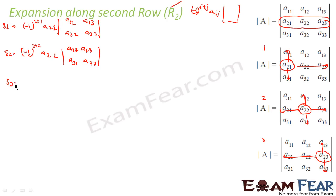For set 3, I have a23, so it will be minus 1 to the power 2 plus 3, a23, and then we have the elements a11, a12, a31, a32. So a11, a12, a31, a32. Correct? So I have got three outputs in three steps.